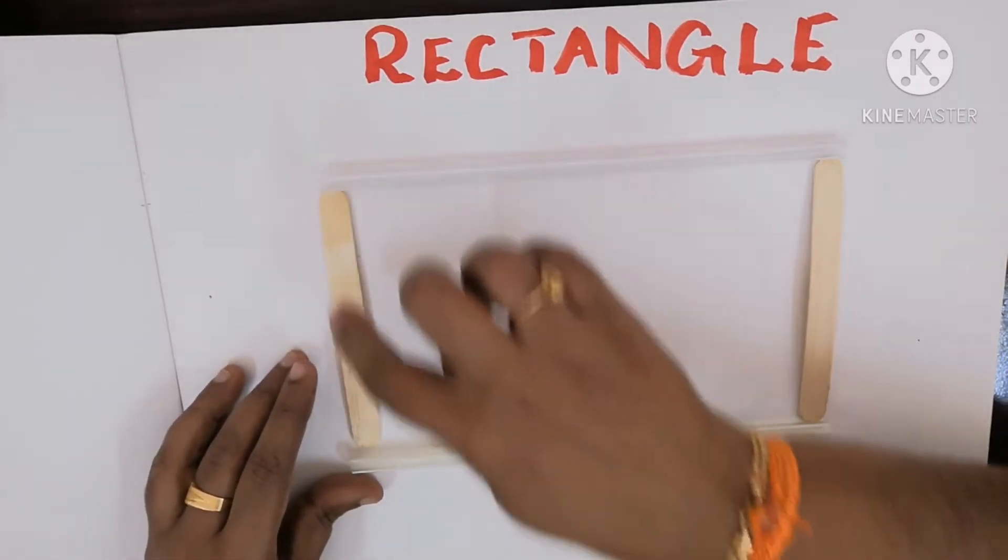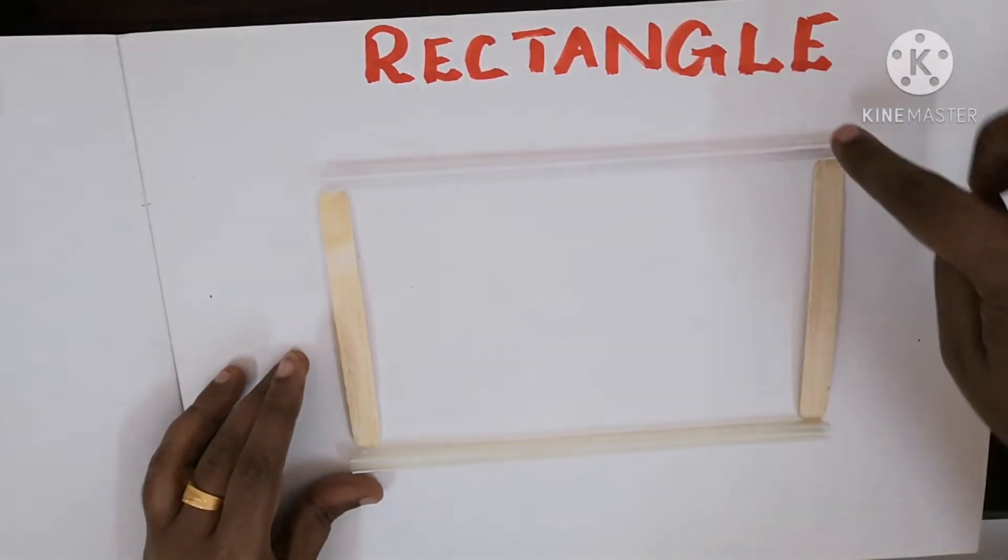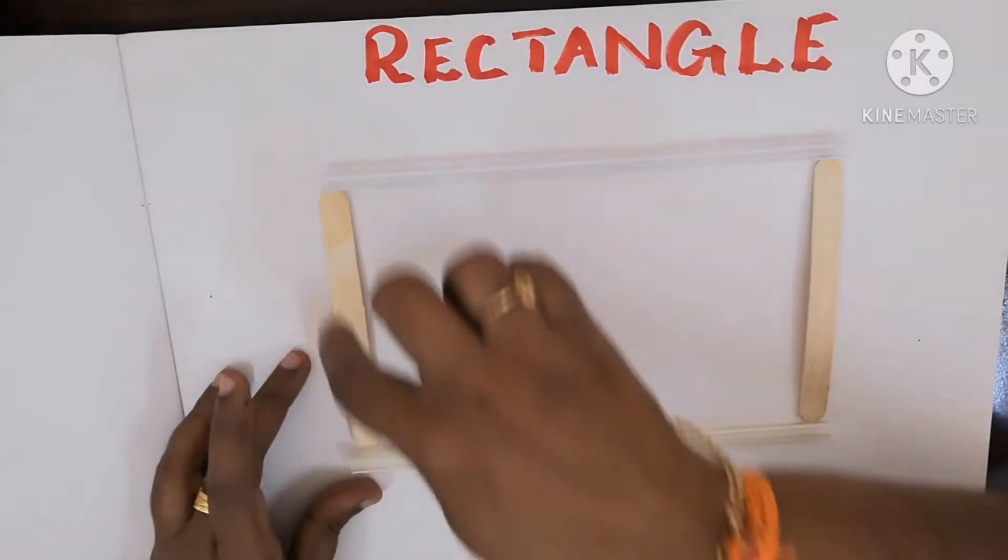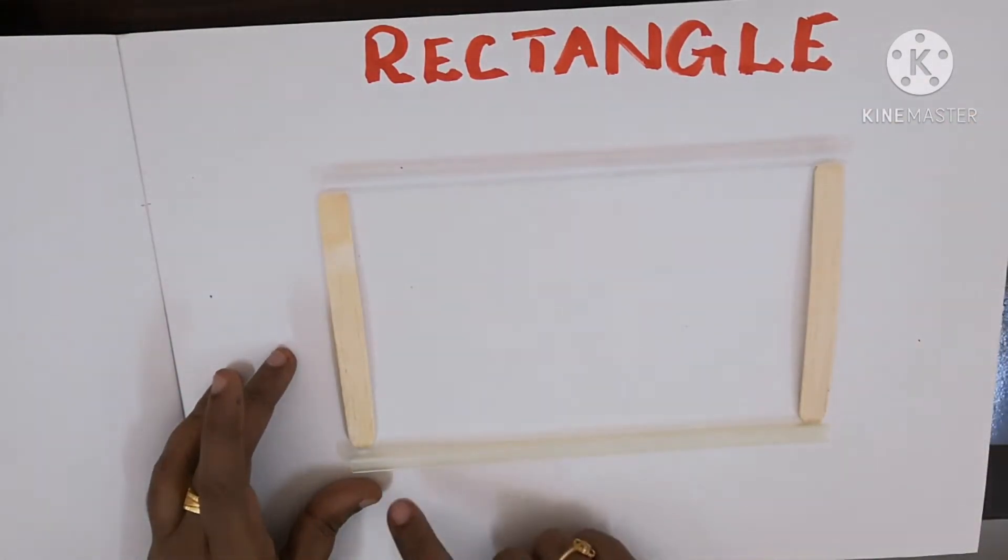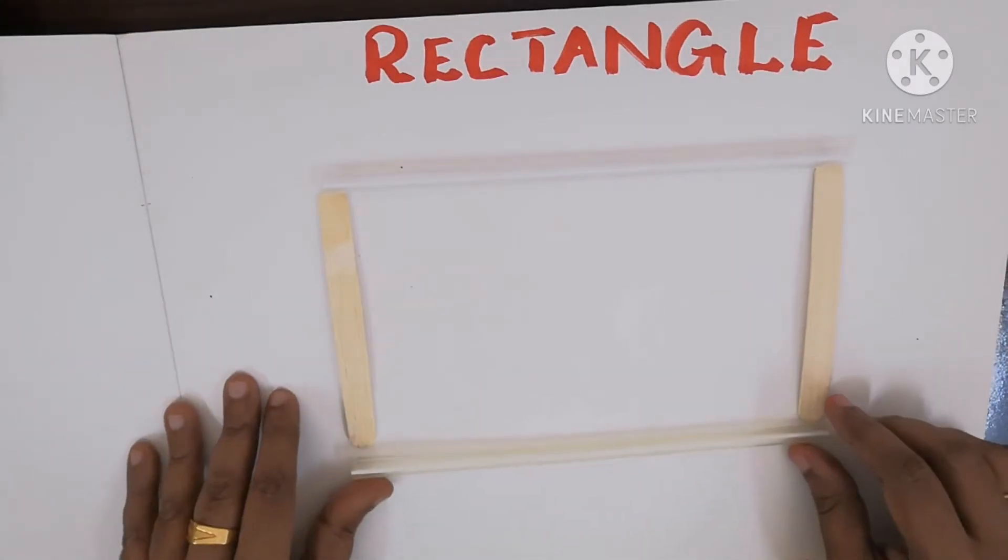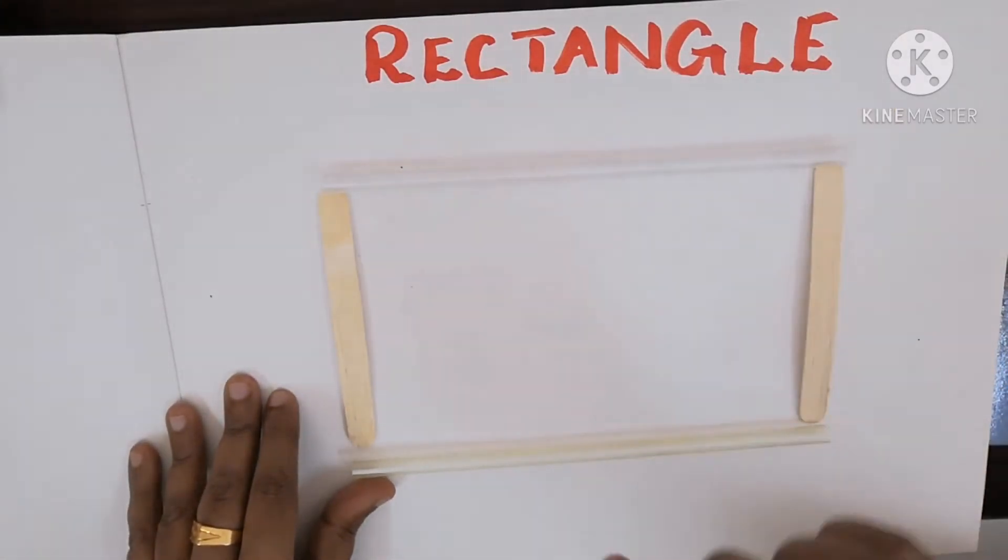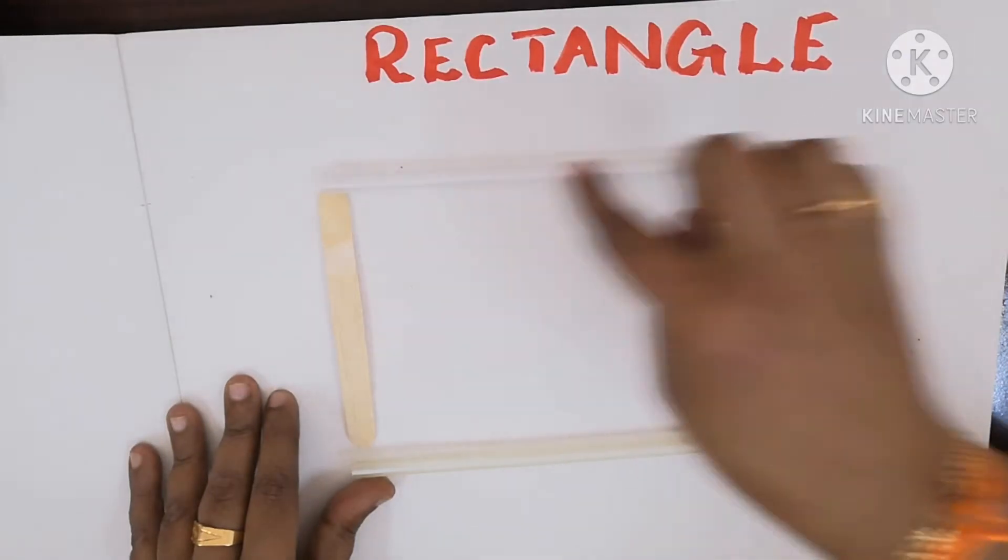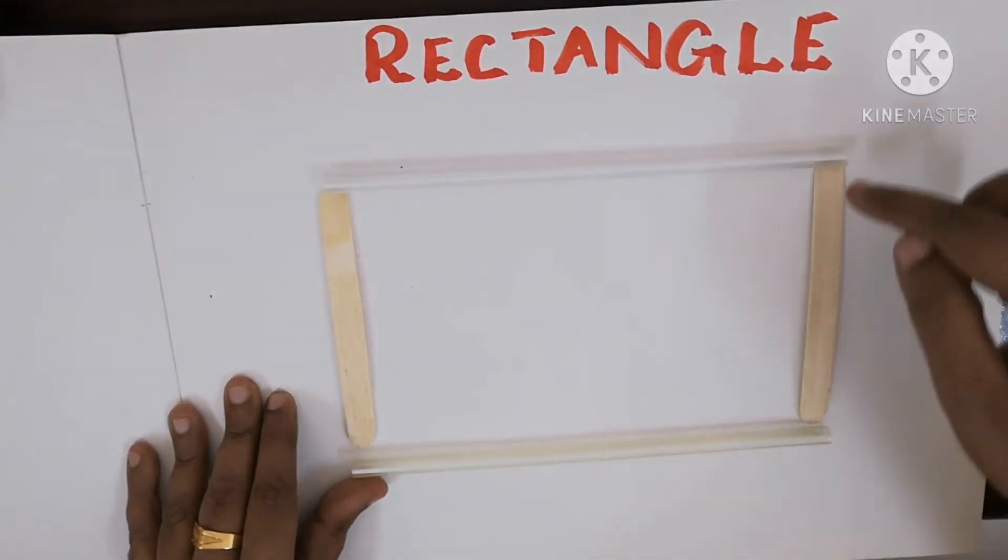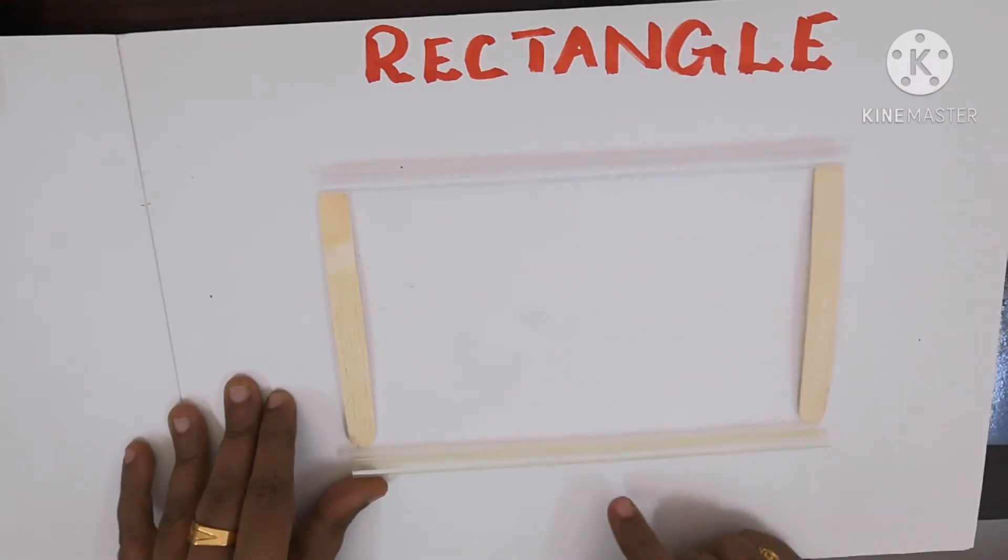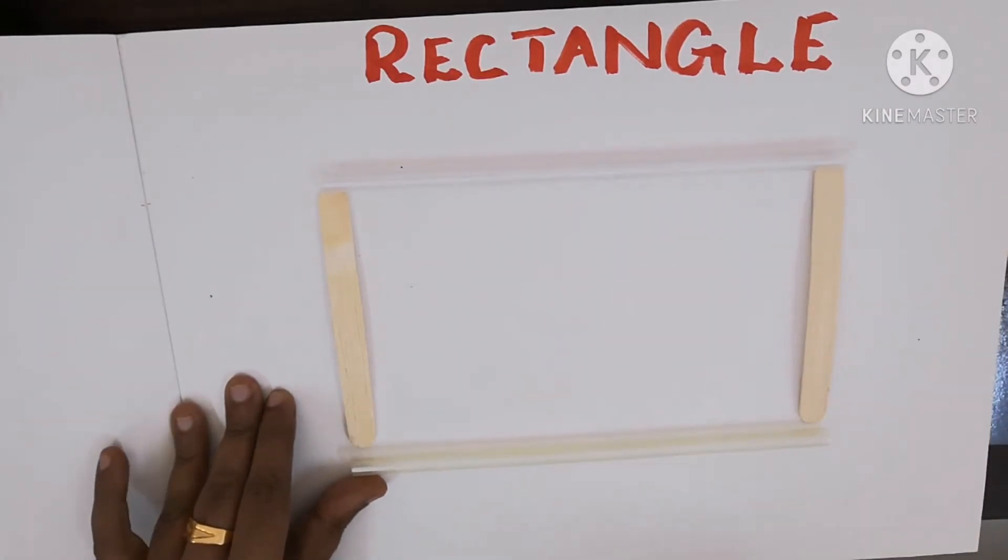Rectangle has four sides: one, two, three, four. And it has four corners also. In rectangle, the opposite sides are equal. The length of the opposite sides are equal. These two sides are equal, and these two sides are equal. What is this? Rectangle.